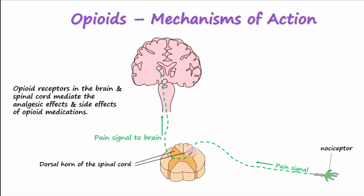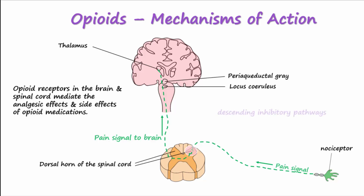These receptors are located in many areas of the brain, including the thalamus, and in the periaqueductal gray and locus coeruleus that are originations for descending inhibitory pathways. When these pathways are activated, the signals descend to the spinal cord to inhibit ascending pain signals and prevent them from reaching the brain.